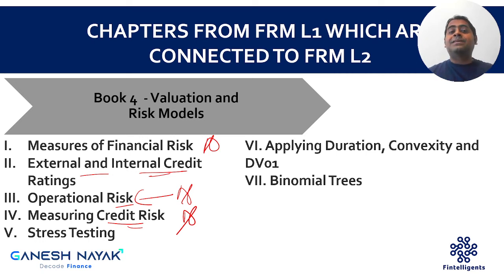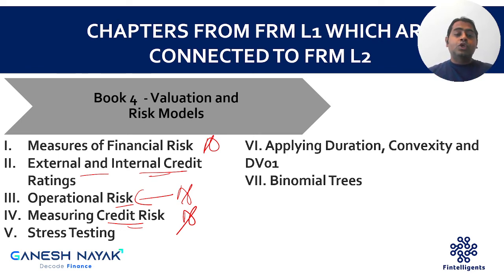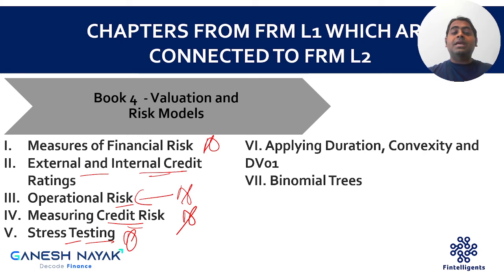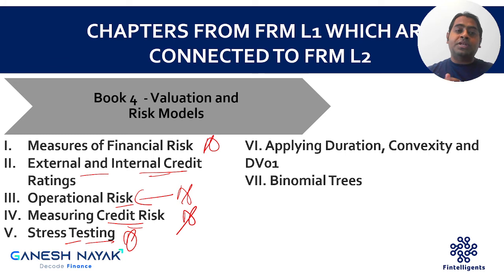Measuring Credit Risk is important because it is explicitly connected to the Credit Risk Measurement and Management book in Level 2, which has around 16 to 18 chapters. If you're good on this topic, concepts related to expected loss and unexpected loss will become easier. Stress Testing is important too — in Level 1 it was introductory, but in Level 2 it is discussed in liquidity risk, credit risk, market risk, and scenario analysis across many chapters.